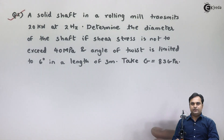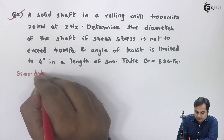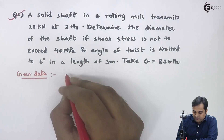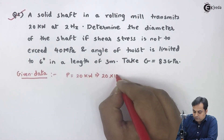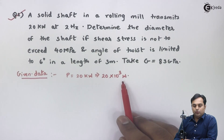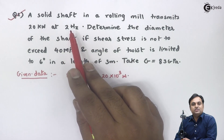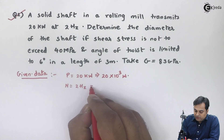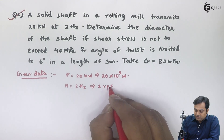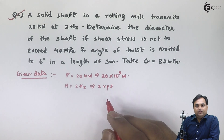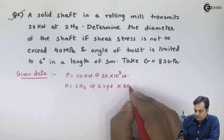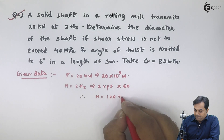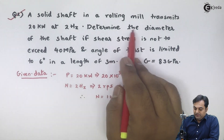We will write the data for this. It is given that a solid shaft in a rolling mill transmits 20 kilowatts, so power is given in kilowatts — we convert it into watts by multiplying by 1000. At 2 Hertz, meaning 2 revolutions per second, we convert it into revolutions per minute by multiplying by 60, giving 120 RPM.